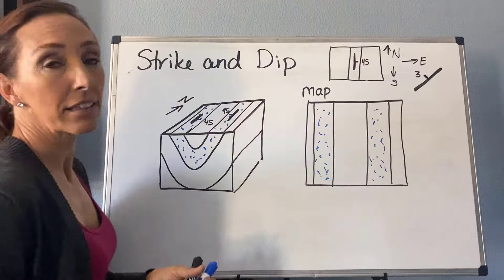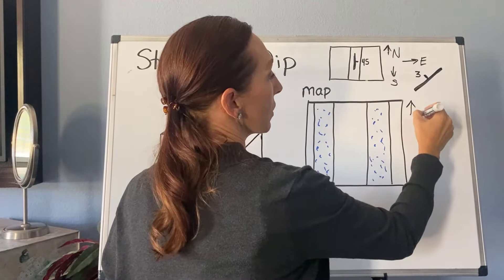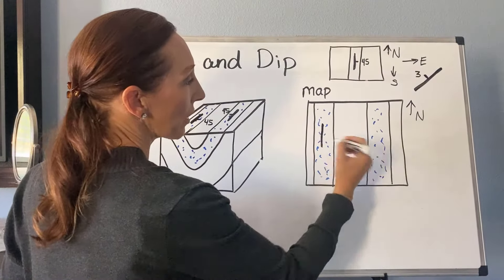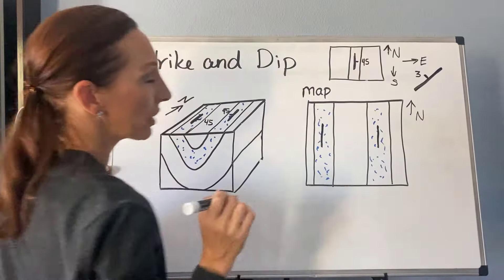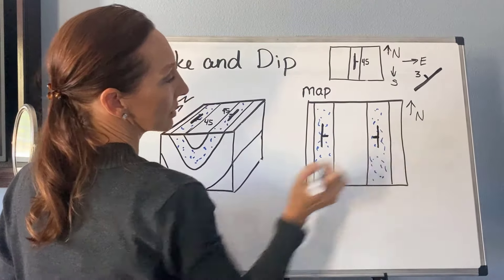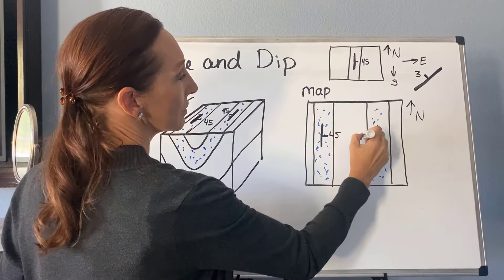So how do we write these strike and dip symbols here? So again, assuming that this is north on our little map, we would draw a north-south strike in both locations, and we would know that it's dipping to the center. And then I would write my 45 and my 45.